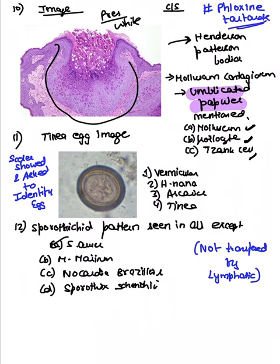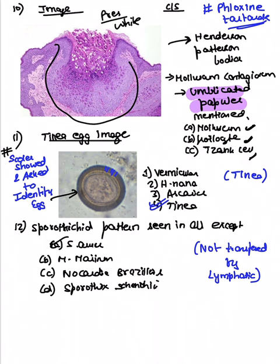A picture of a scolex was shown — the same image discussed in the parasitology image revision video. The image shows radial striation seen in Taenia. Taenia is a cestode, and it has a hexacanth embryo (six-hooked embryo).